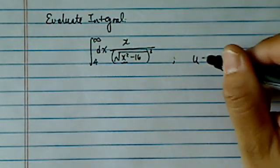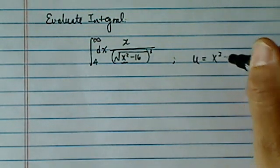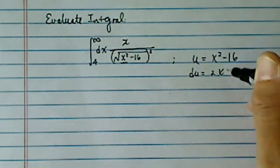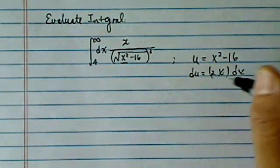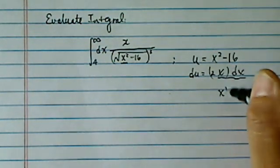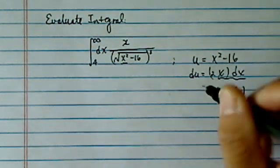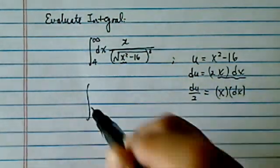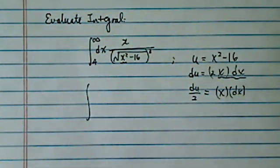That's because if you let u equals x squared minus 16, then du is twice x times dx. So we have what we required for the numerator, which is du divided by 2, right? So this turned out to be a pretty nice trick over here.